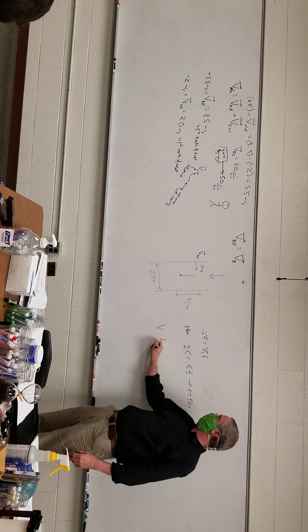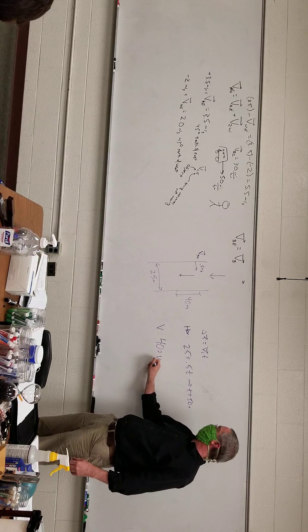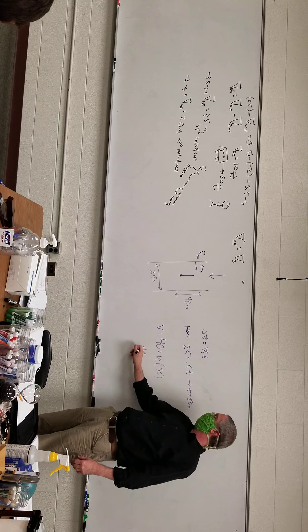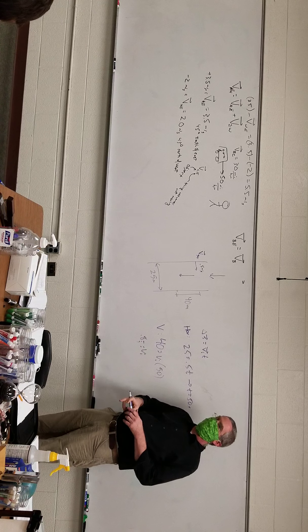Vertically, plug into the exact same equation. 40 is equal to vi times 50, so 0.8 meters per second. That's how fast the water is going.